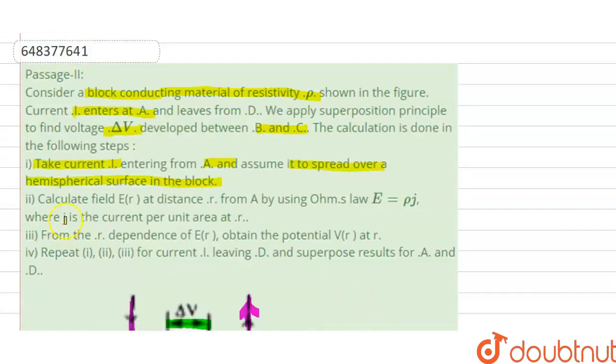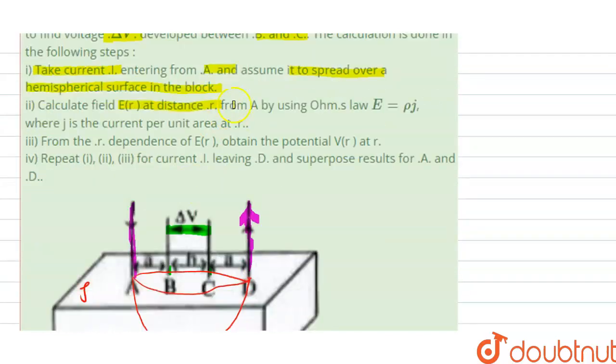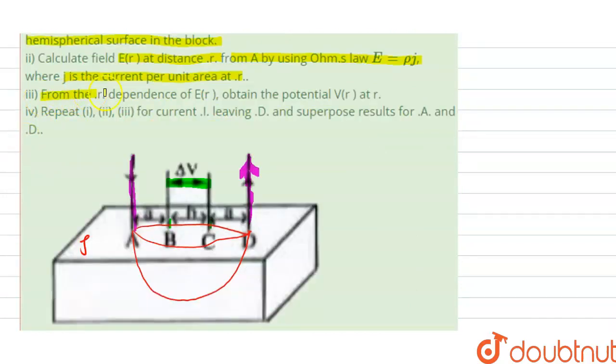Next, it is saying calculate the electric field at a distance r from point A by using Ohm's law, that is E equal to rho, that is volumetric density, into current density j. Here j is the current density, current per unit area at r.